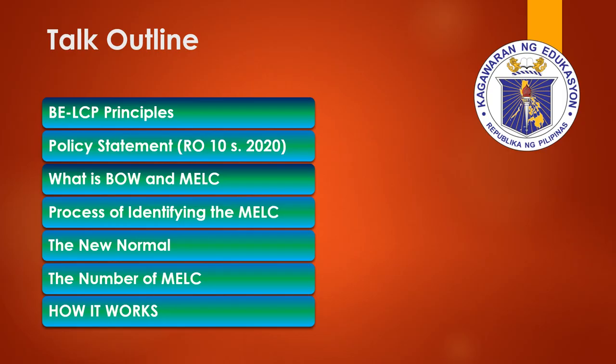In the topic outline, we have the Basic Education Learning Continuity Plan Principles, the Policy Statement under Regional Order No. 10 Series 2020, what is BOW and MELC, the process of identifying the MELC, the new normal, the number of MELCs, and how it works.